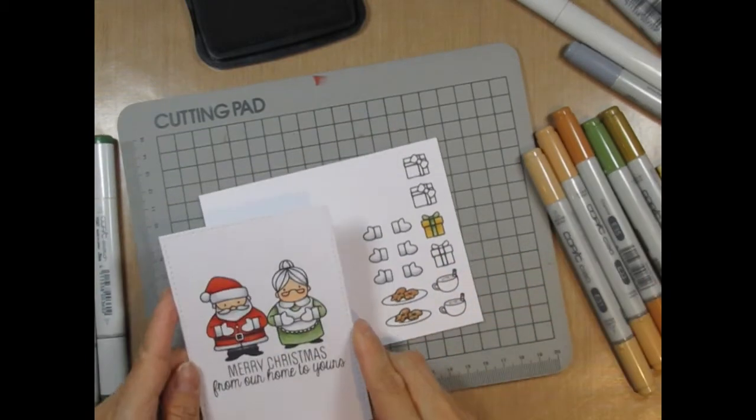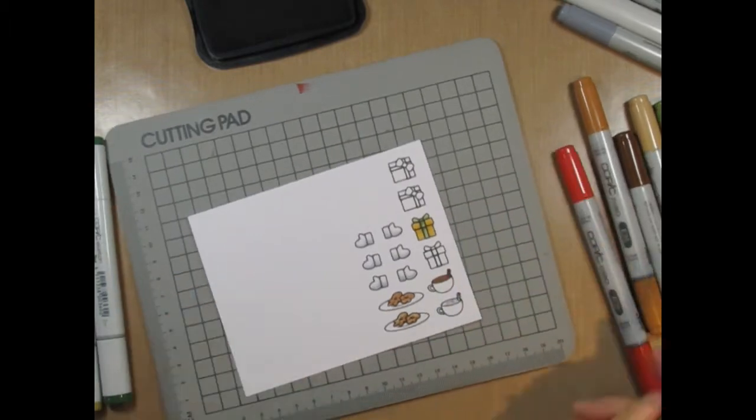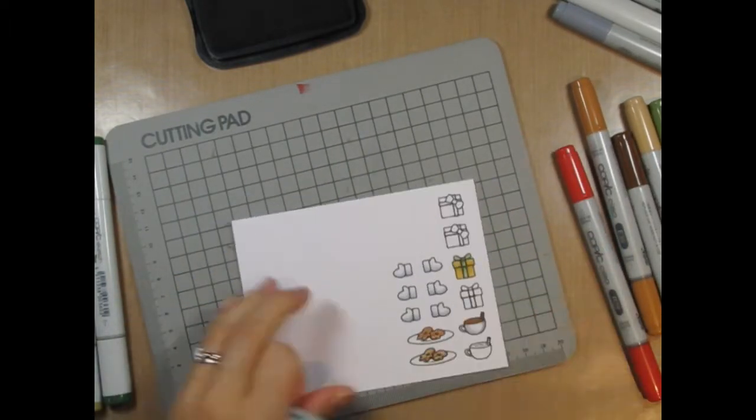I'm just referring back to the main panel as I color these smaller elements, so I can choose colors that will contrast against Mrs. Claus and Santa.